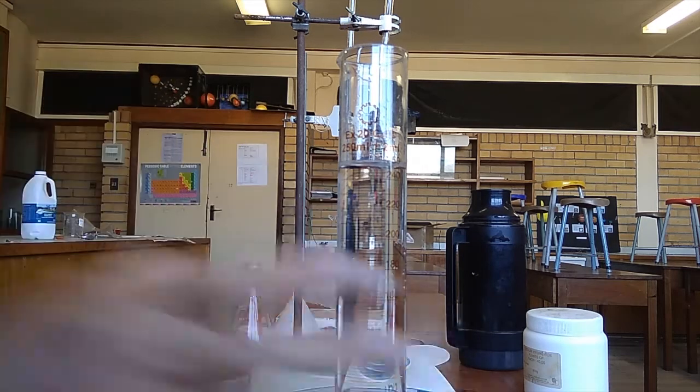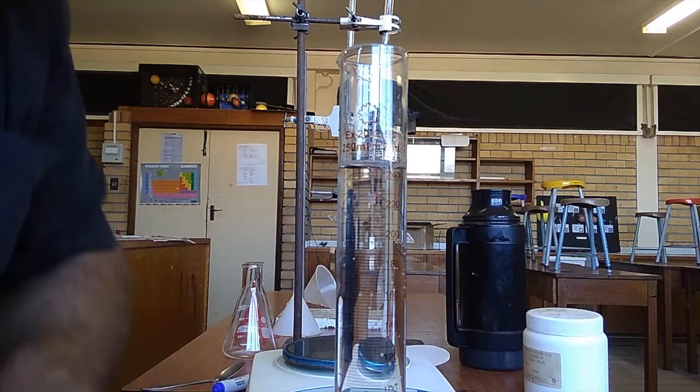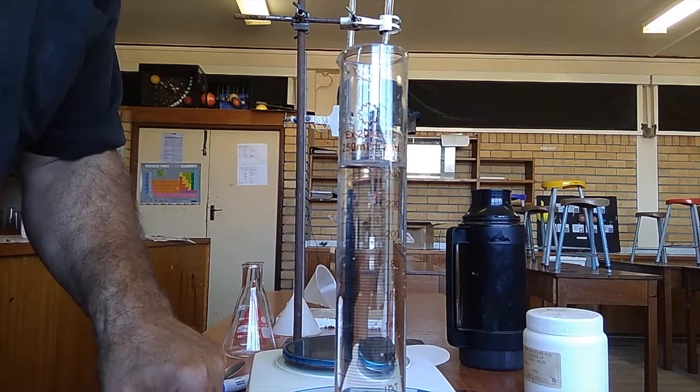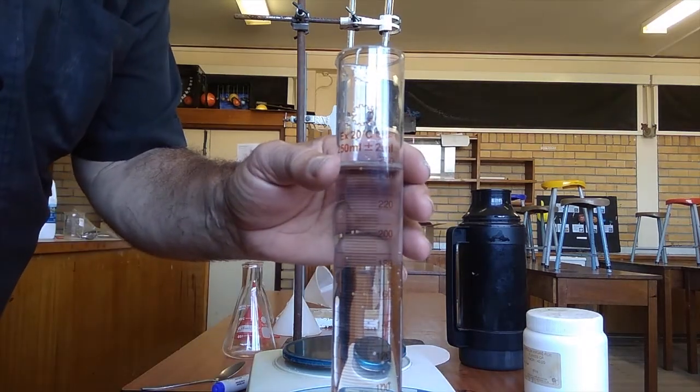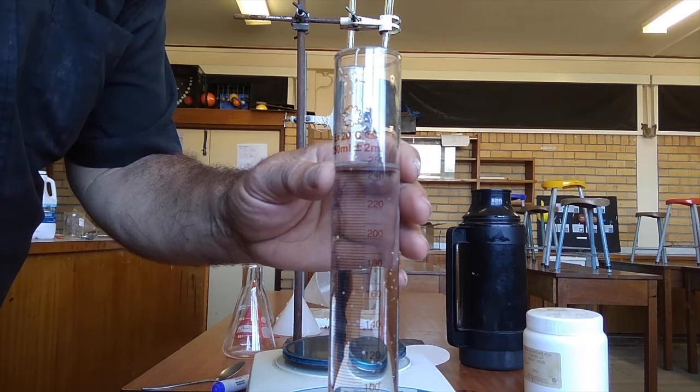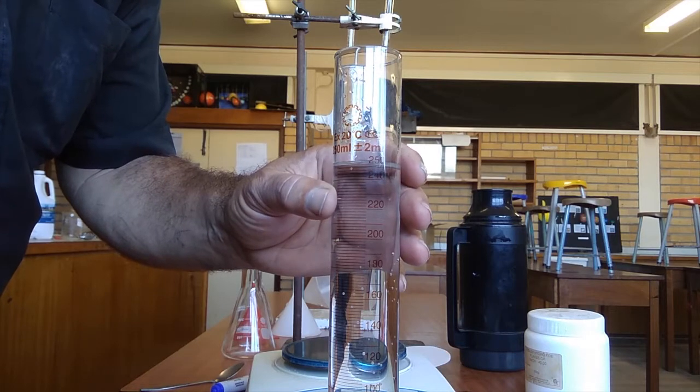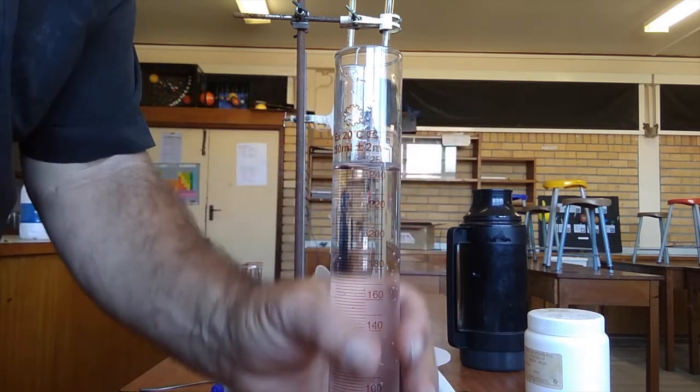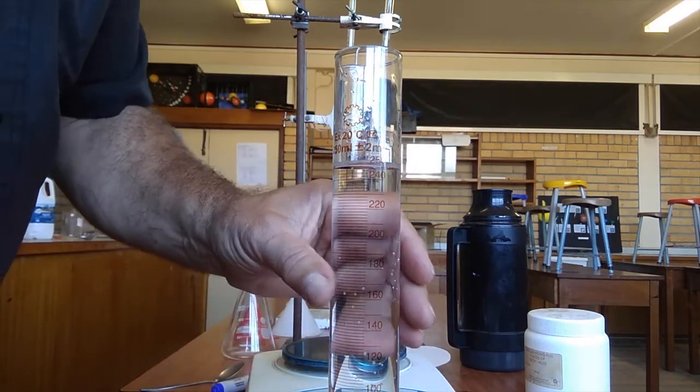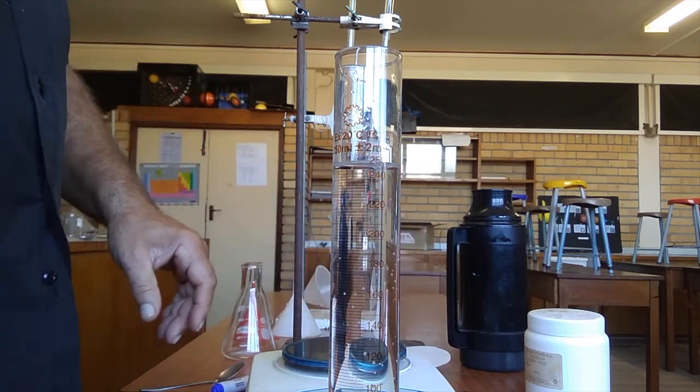Now we've got 6.34 grams of oxalic acid in 250 milliliters of water, made up to a 250 milliliter solution. We have what is known as a standard solution of oxalic acid.